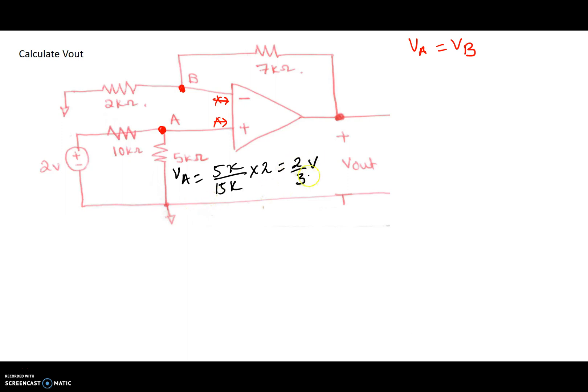So VA is at 2 thirds of a volt, and because of ideal op-amp, VA and VB are at the same node. So this node also is at 2 thirds of a volt.